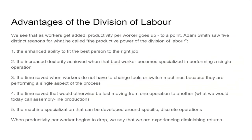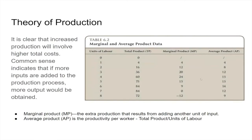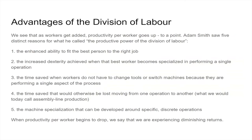So we see that the division of labor and the numbers here show that division of labor certainly helps increase productivity. There are several key advantages: enhanced ability to fit the best person to the job, increased dexterity achieved by the best worker in the job, time saved when workers don't have to change tools or switch machines because they're performing a single aspect, time saved by not moving from one operation to another, and machine specialization. When productivity per worker begins to drop, we say we're experiencing diminishing returns.